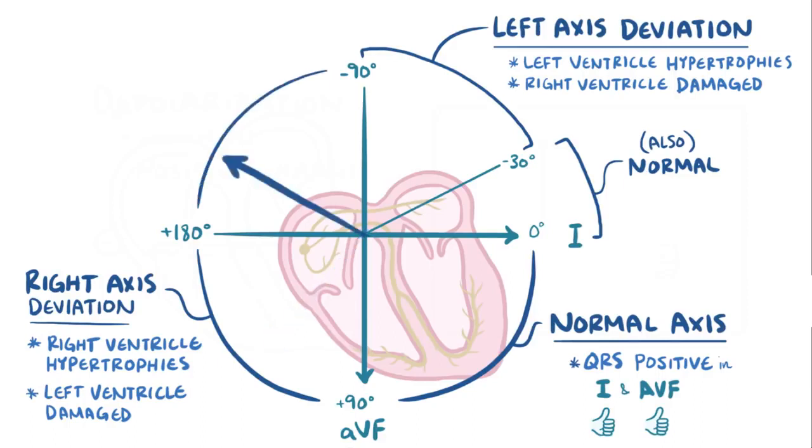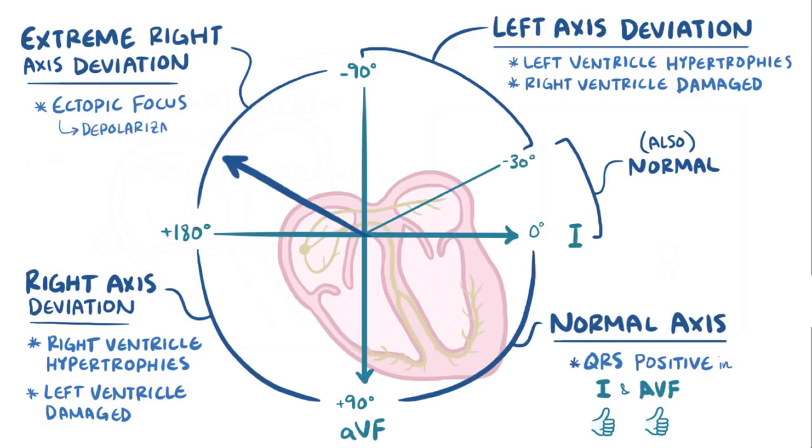Finally if the vector is negative in both lead 1 and AVF, then that's a super rare case called extreme right-axis deviation, which is between negative 90 and plus 180 degrees. This can sometimes happen when there's an ectopic focus that causes depolarization to start from the bottom of the ventricles and travel in the reverse direction. It's also a good idea in this case to double check that the leads are placed correctly.